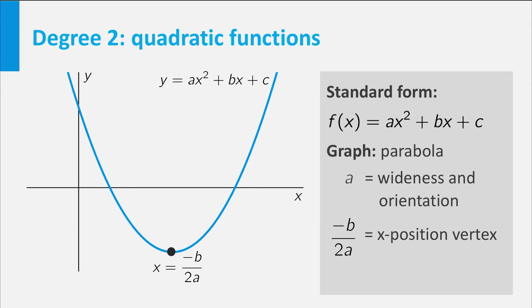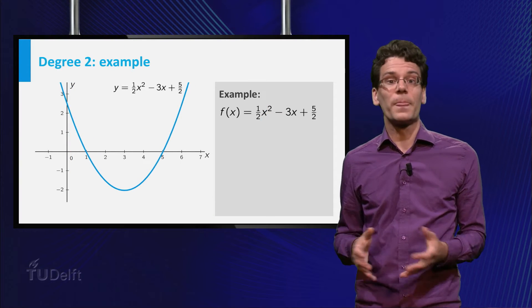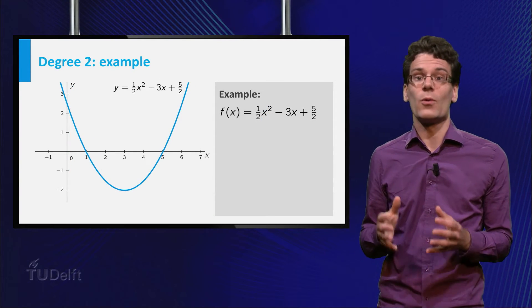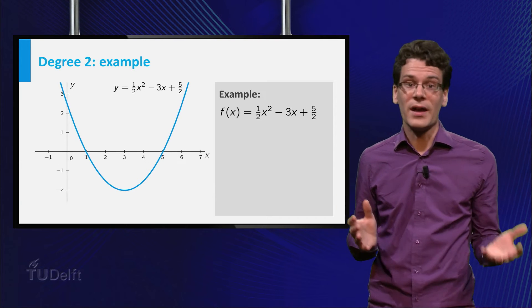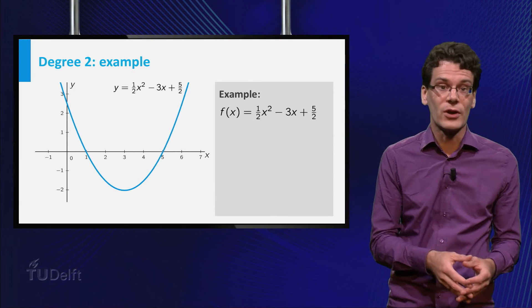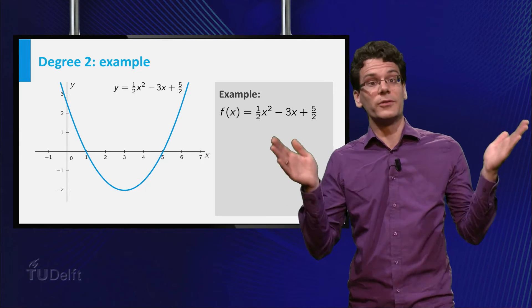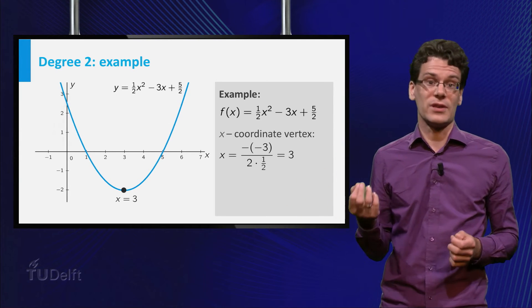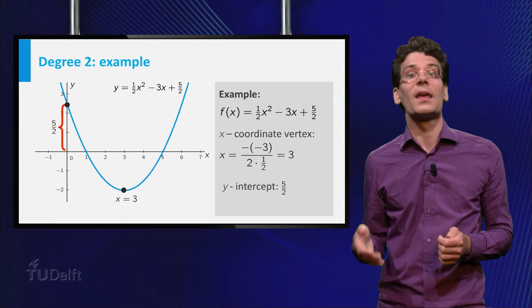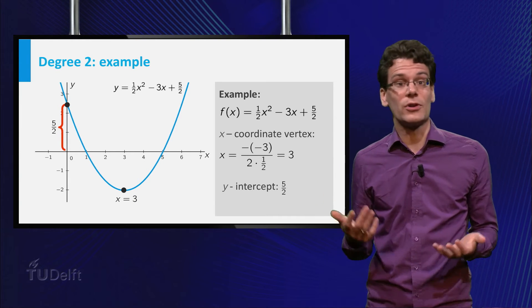Furthermore, the x-coordinate of the vertex of the parabola is located at x equals minus b divided by 2a. And finally, c gives the y-intercept of the graph. Let me show you an example. f of x equals 1 half times x squared minus 3 times x plus 5 over 2. Indeed, you see that the graph opens upward. The x-coordinate of the vertex equals minus b over 2a, and the y-intercept equals the constant term.